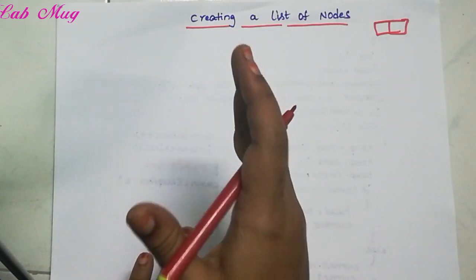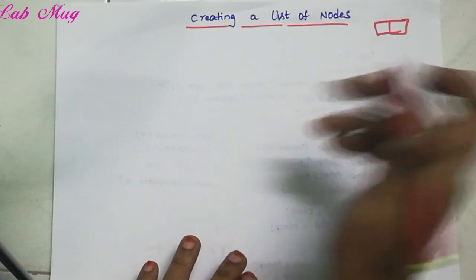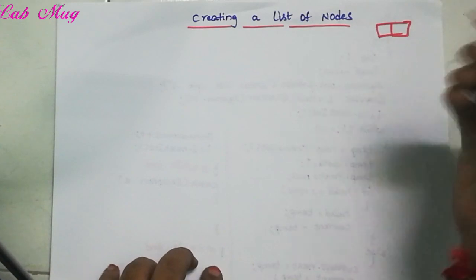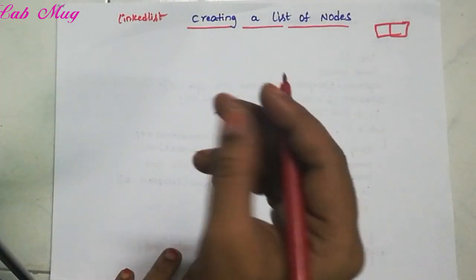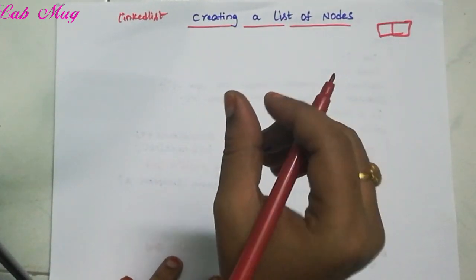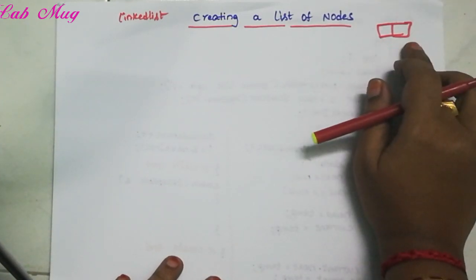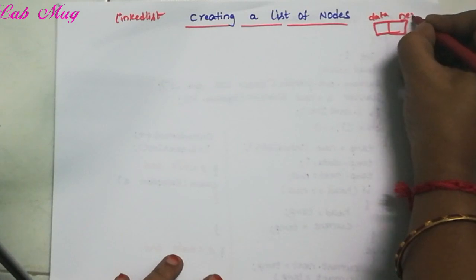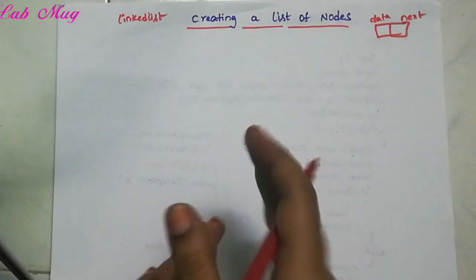First of all, we create a node. We create a class. In the last class, we created two parts of the node — two variables. We create the class name. We create a linked list. In that class there are two parts: the first part is the data part, and the second part is the address part, also called next. So in the linked list, we declare two variables — data and next.